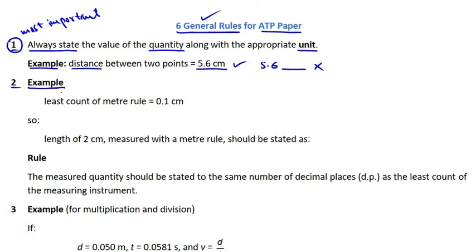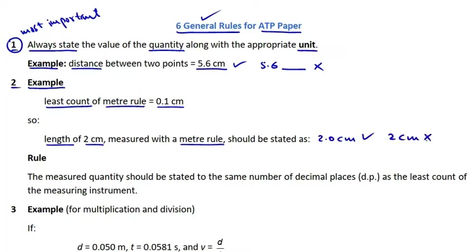Let's learn the next rule with the help of an example. We all know that the least count of a typical meter rule is 0.1 centimeters. So a length of 2 centimeters measured with a meter rule should be stated as 2.0 centimeters, not as just 2 centimeters.